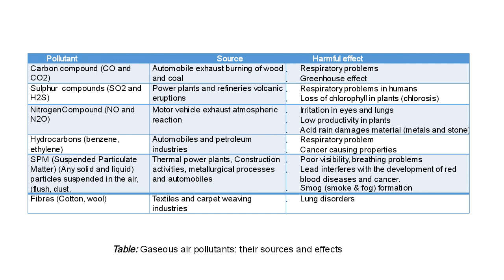A table shows various gaseous air pollutants and their sources and effects. Carbon compounds such as carbon monoxide and carbon dioxide come from automobile exhaust and burning of wood or coal, causing respiratory problems. Carbon dioxide also contributes to the greenhouse effect. Sulfur compounds — sulfur dioxide, sulfur trioxide, hydrogen sulfide — are emitted from power plants, refineries, and volcanic eruptions, causing respiratory problems in humans and loss of chlorophyll in plants.